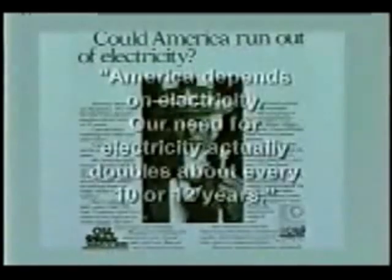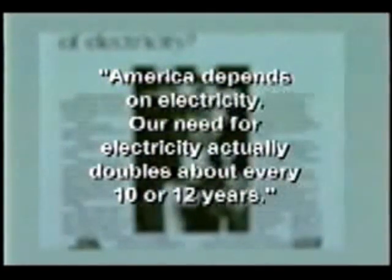Now let's translate that into the energy crisis. Here's an ad from the year 1975 that asked the question, 'Could America run out of electricity?' America depends on electricity — our need for electricity actually doubles every 10 or 12 years. That's an accurate reflection of a very long history of steady growth of the electric industry in this country, growth at a rate of around 7% per year, which goes with doubling every 10 years. With all that history of growth, it was expected the growth would just go on forever. Fortunately it stopped — not because anyone understood the arithmetic, it stopped for other reasons.